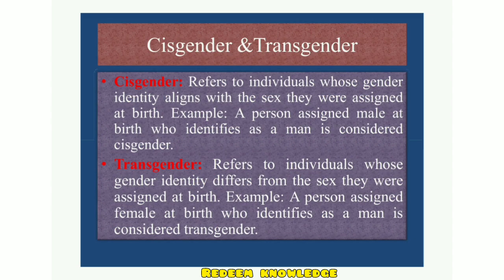Ab cisgender aur transgender. Cisgender refers to individuals whose gender identity aligns with the sex they were assigned at birth. Example: a person assigned male at birth who identifies as a man is considered cisgender. Kisi ko biological characteristics ki buniyaad par male declare kiya — jab woh bada hota hai, woh apne aap ko male hi identify karta hai. Female declare kiya, woh apne aap ko woman hi identify karti hai. This is called cisgender — jisme koi change nahin aati.